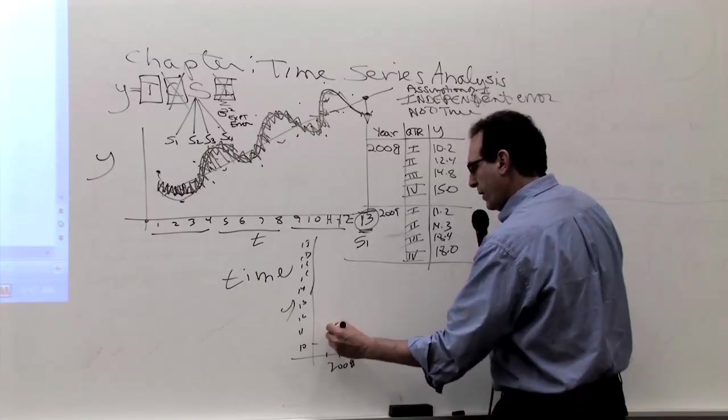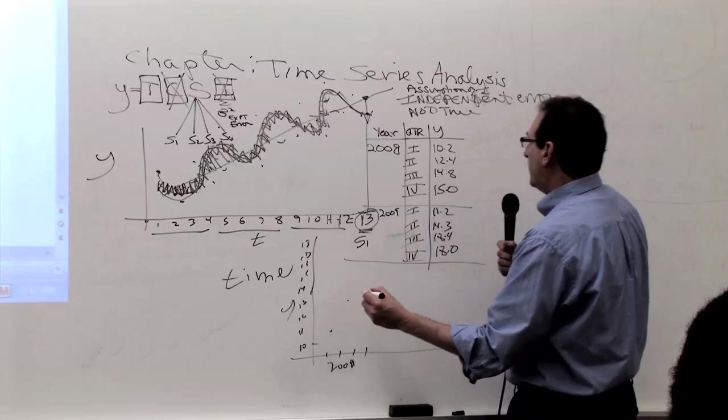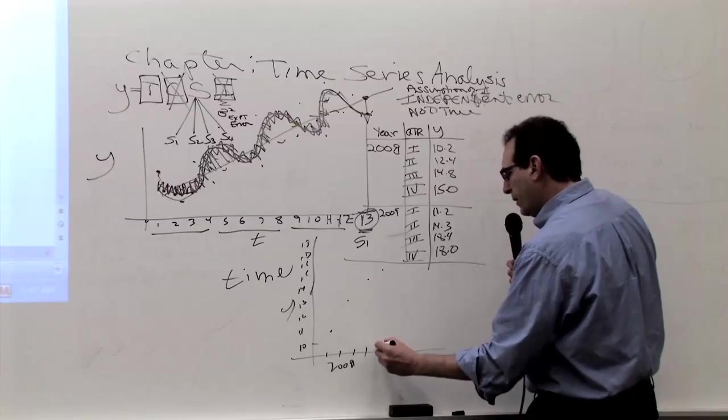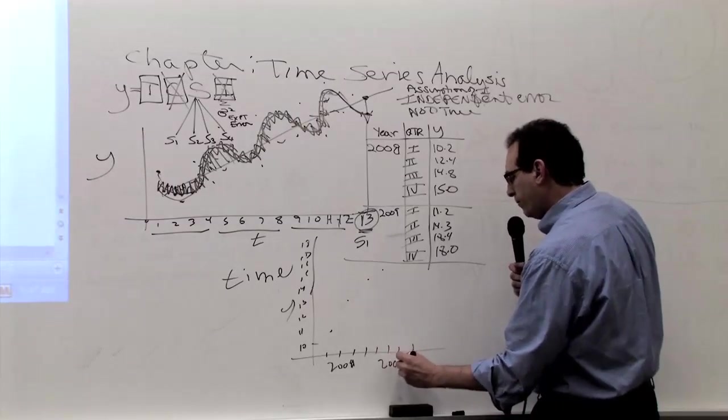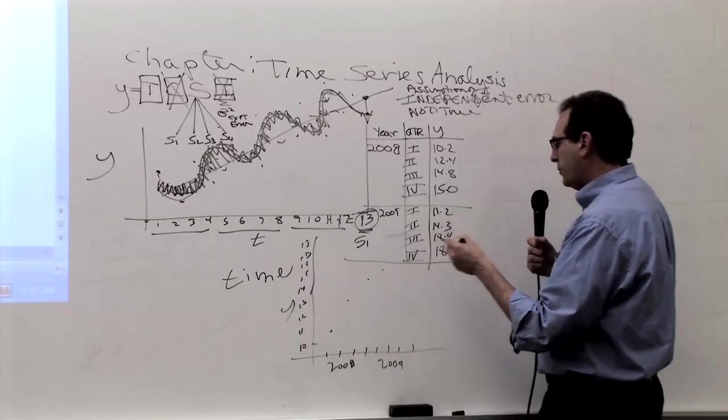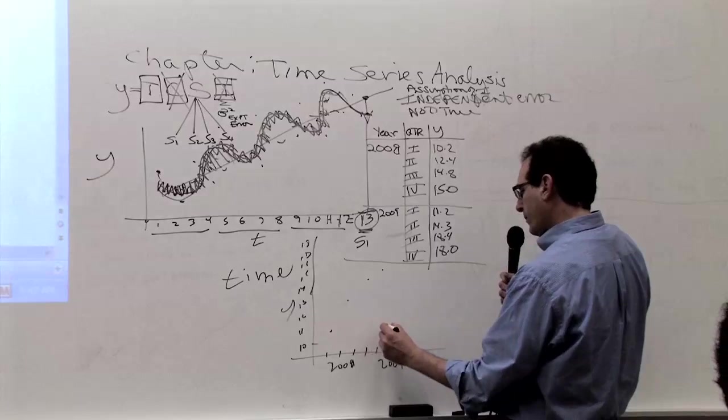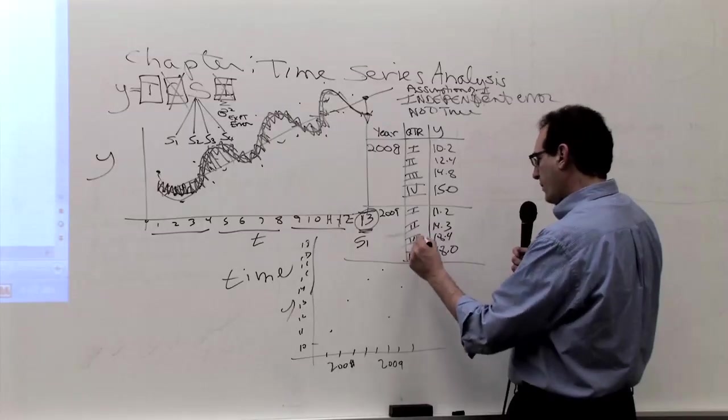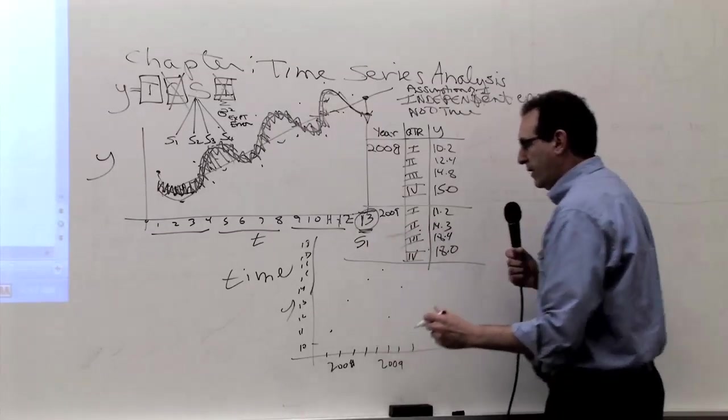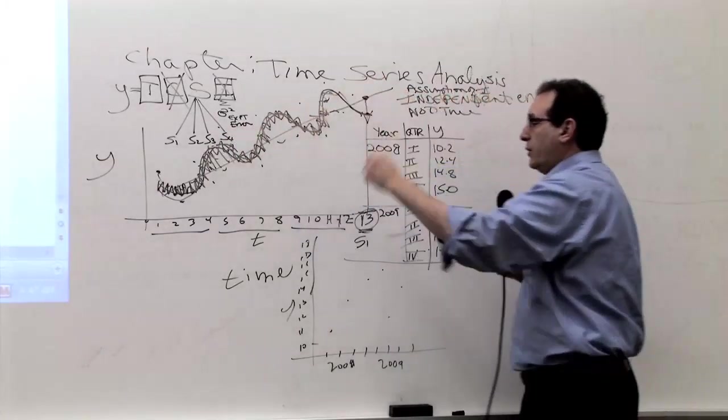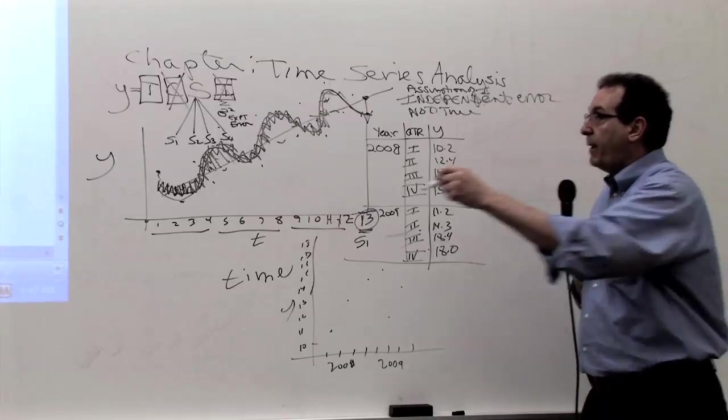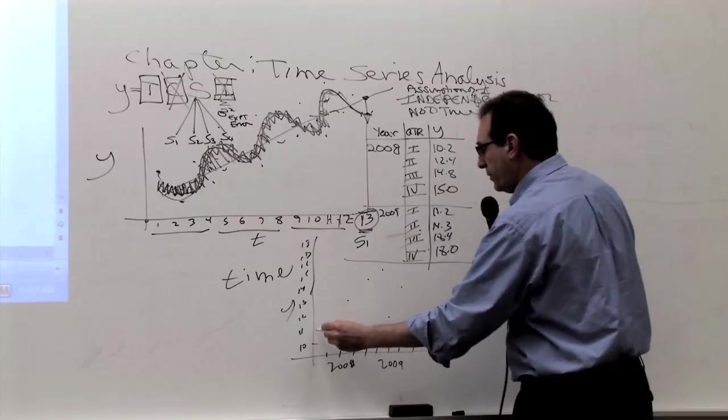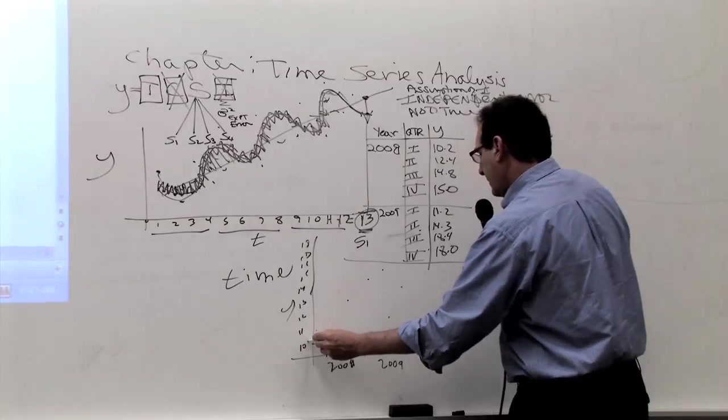2008. Thank you. 2008. And this 10.2. Do it quickly. Because again, we only have a few minutes. 12.4, 14.8, 15.0. Then we're going to go to 11.2. Then it would be 2009. One, two, three, four. It was 11.2. Then 14.3. Then 18.4. And 18.0. Now, would you connect it like this? Or would you connect it by a straight line? The answer is at this point, well, if the data had a nice pattern, if the data followed one of the patterns I'm trying to teach you, I would connect it like that. But really, we just want to create basically the straight line through the data.